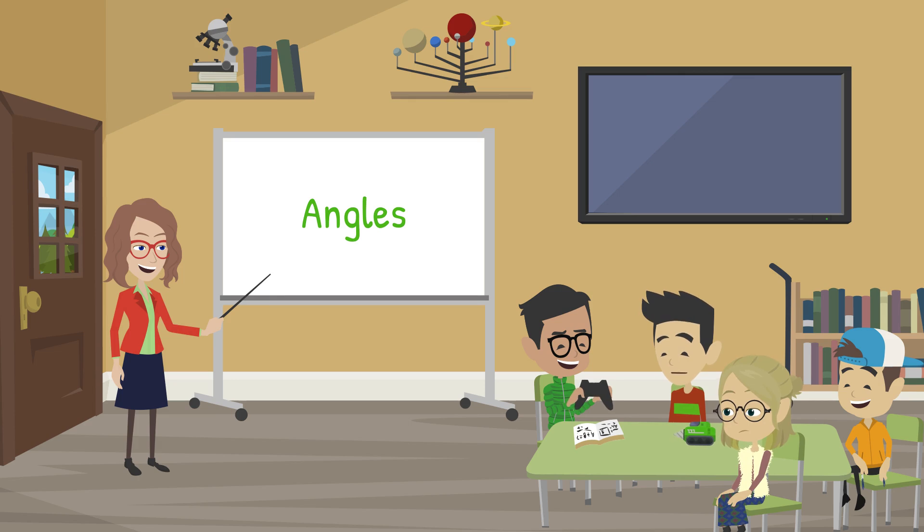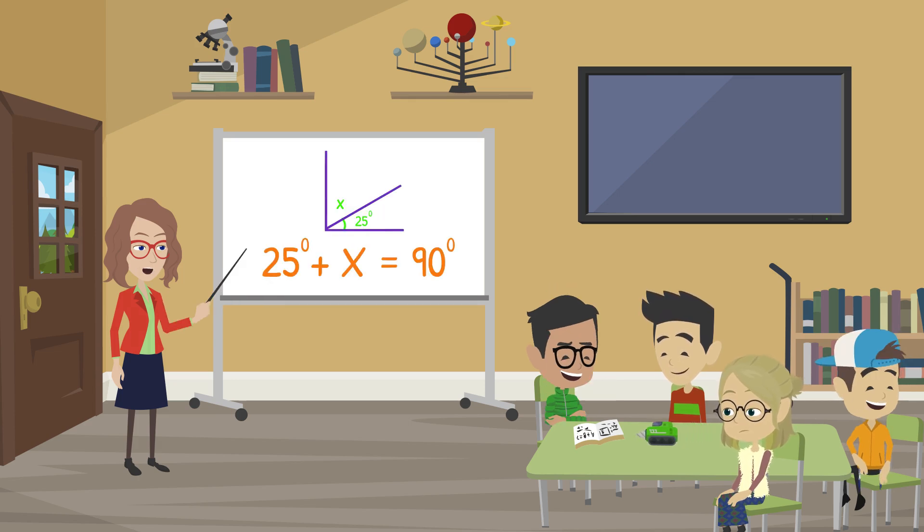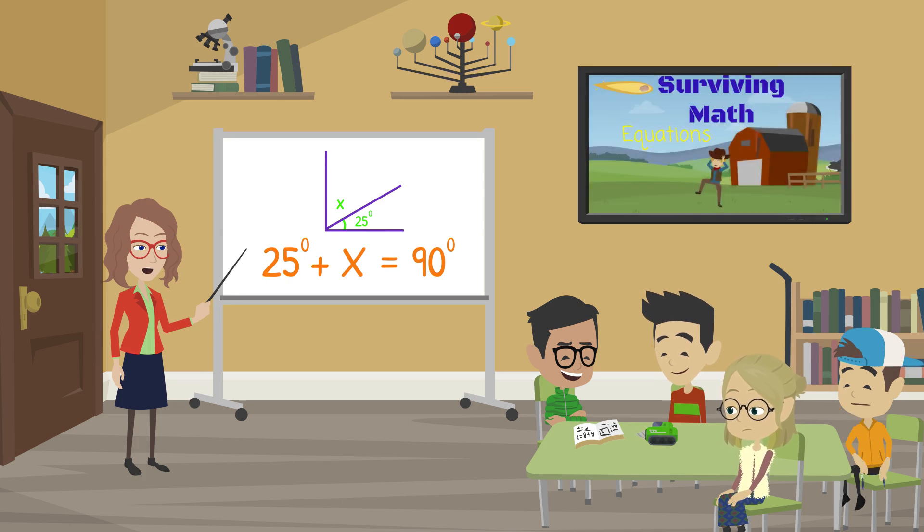Well, we survived another math class. And here we have an angle with an unknown degree. To find the missing degree, we can write it out in the form of an equation and simply solve for X. I could use a little help. I've forgotten how to solve equations. No problem. Here's a video on equations. It should help.